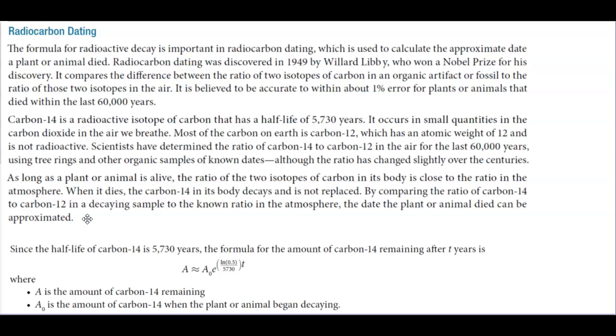As long as a plant or animal is alive, the ratio of the two isotopes of carbon in its body is close to the ratio in the atmosphere. When it dies, the carbon-14 in its body decays and is not replaced. By comparing the ratio of carbon-14 to carbon-12 in a decaying sample to the known ratio in the atmosphere, the date the plant or animal died can be approximated.